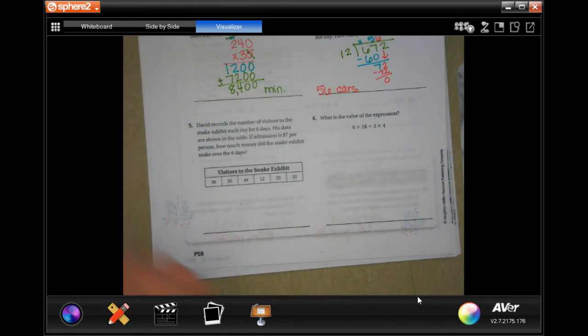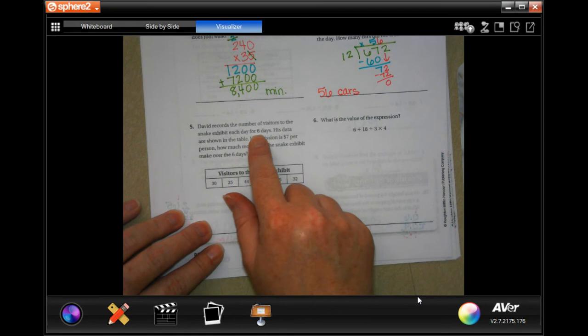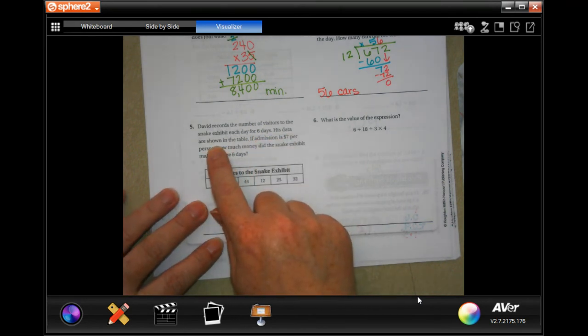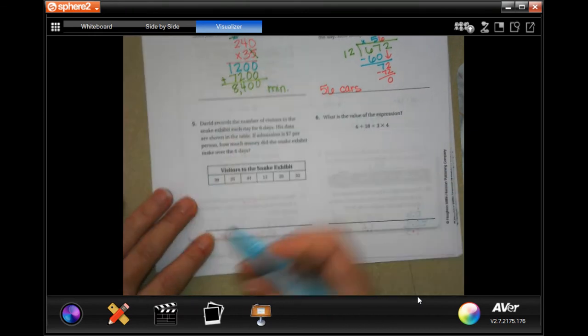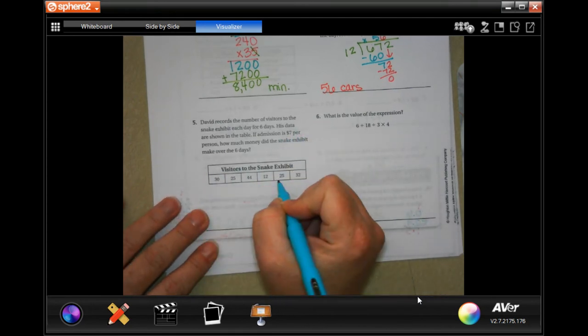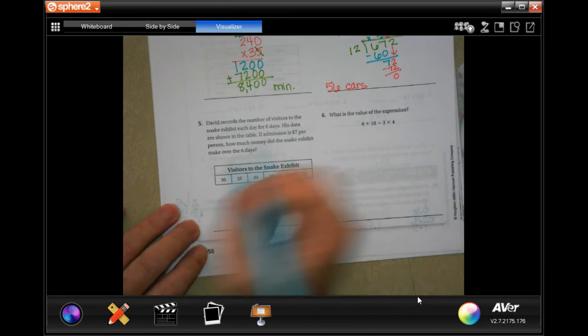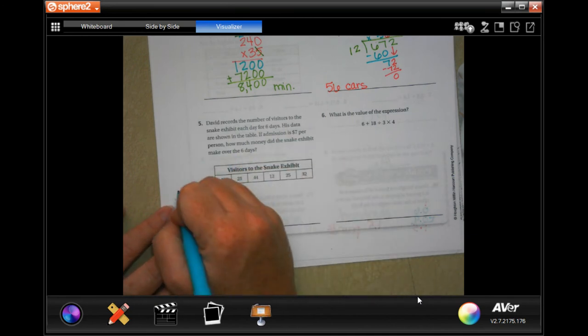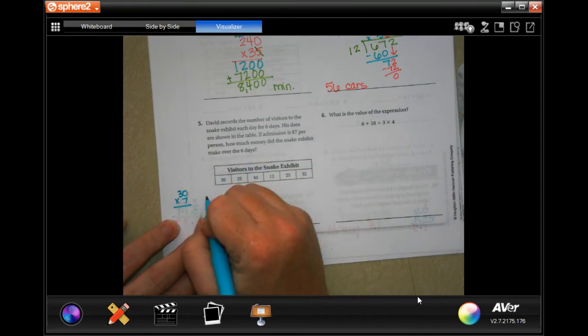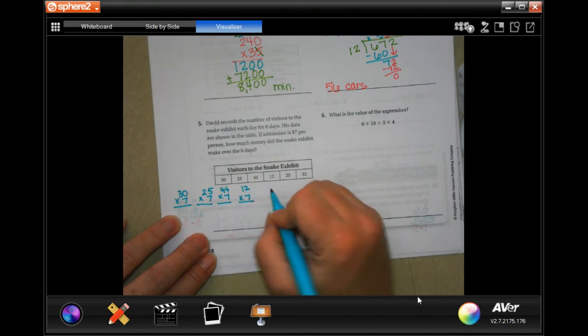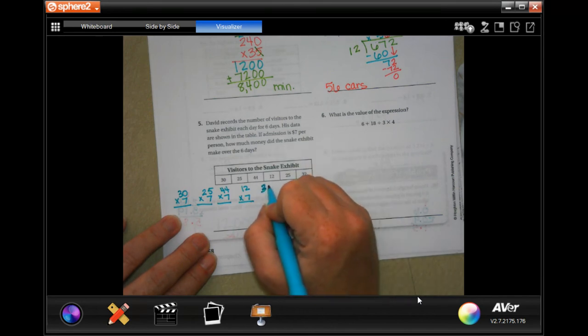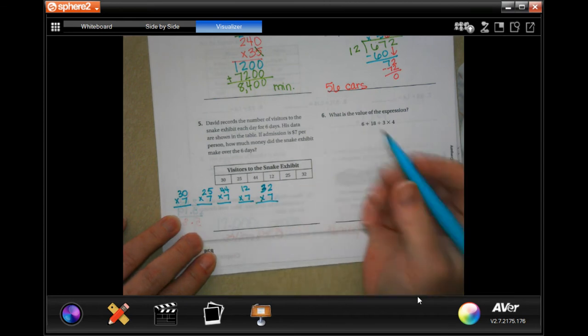David records the number of visitors at the snake exhibit each day for six days. His data are shown in the table. If admission is seven dollars per person, how much money did the snake exhibit make over six days? So I need to multiply each number by seven. Well, there's one, two, three, four. We have another 25 times seven. So I'm not going to do that one twice, but I will add it twice when we're adding them up at the end.